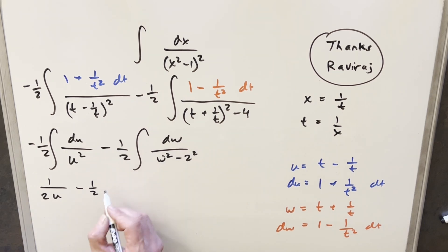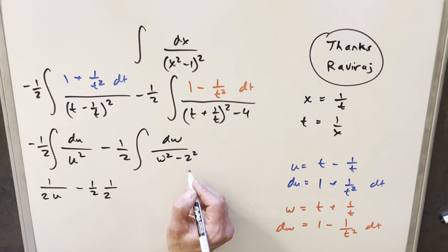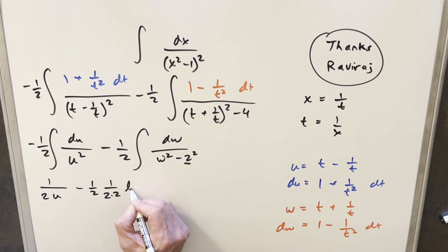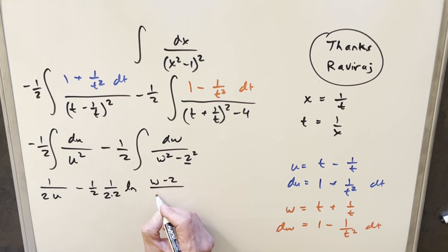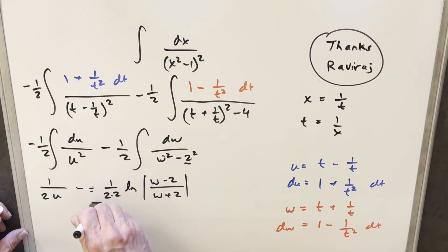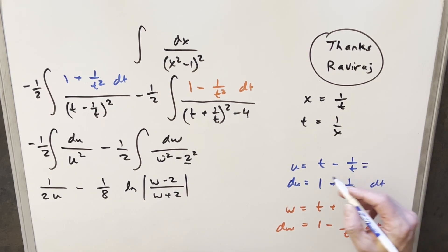So the formula gives 1/4 times natural log of |(w minus 2)/(w plus 2)|. The minus 1/2 times 1/4 cleans up to 1/8. Now all we need to do is back substitute to finish it off, but it's a little tricky — I'm going to get some different values.